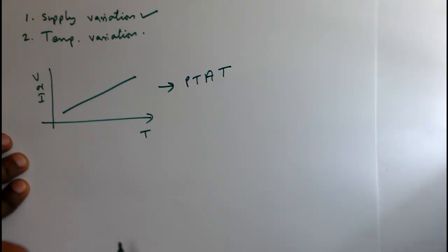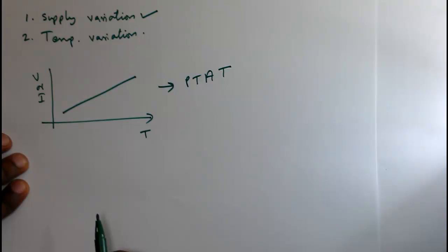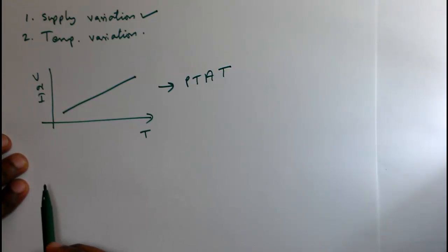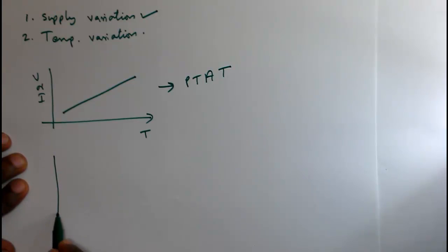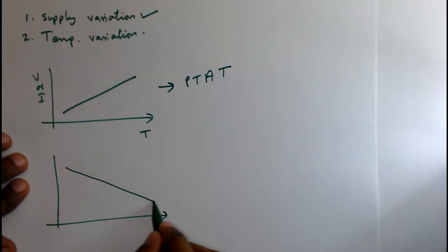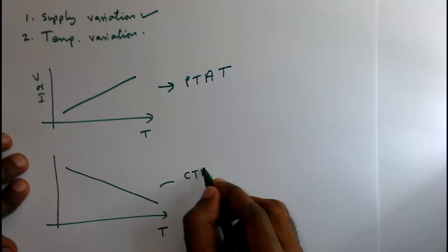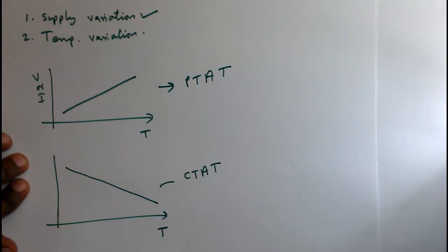PTAT means Proportional To Absolute Temperature. It could be voltage or current — if it is voltage, we call it PTAT voltage. Some of the voltages are PTAT; they will increase with respect to temperature. And some of the voltages or currents are CTAT — that means they will decrease with respect to temperature. We call it CTAT.